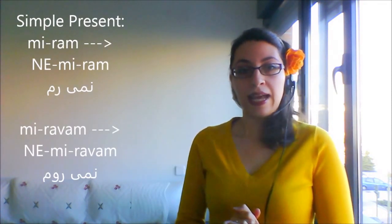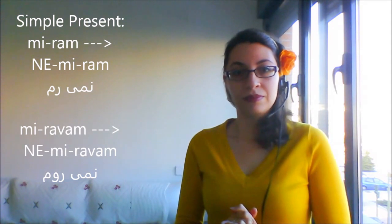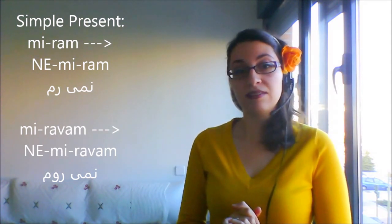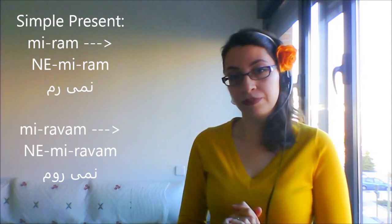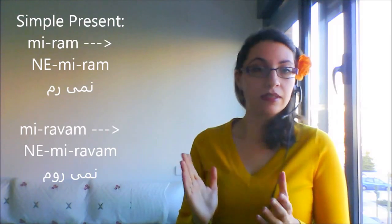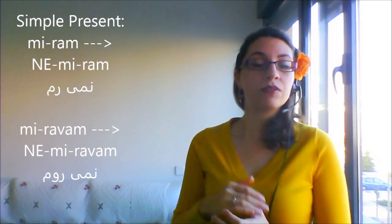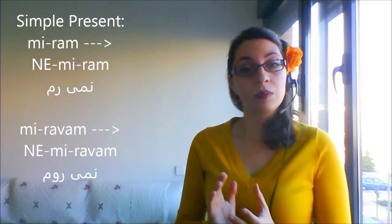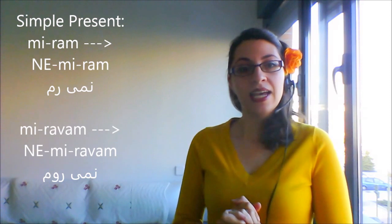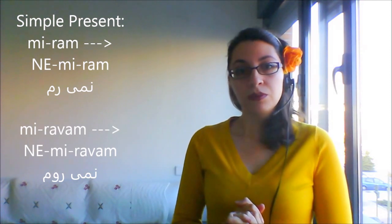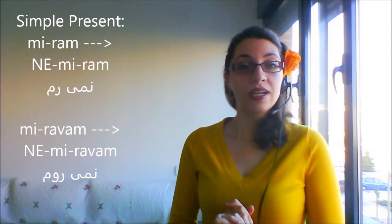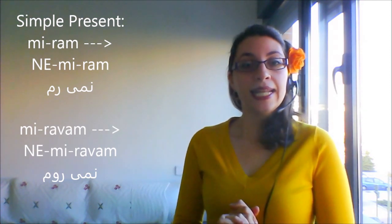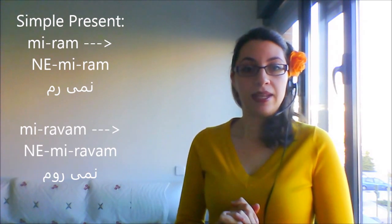Let's start with simple present tense: 'miram' — the colloquial version — or 'miravám' — the bookish version. It doesn't matter if you're working on the colloquial or the bookish version; in both cases the verb starts with 'me', therefore we're supposed to put 'ne' at the beginning of it in order to make it negative.